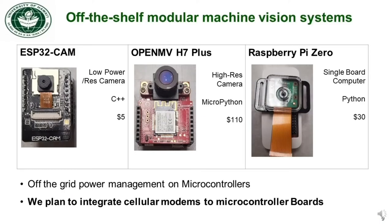All these boards have wireless remote communications. The ESP32 cam and OpenMV are both low-power microcontrollers. They are image-classification capable, and if they detect CRB in an image, they can use Wi-Fi to relay those images. Raspberry Pi Zero is a single-board computer. It fully supports image classification, and we use it for rapid testing of classification models before implementing them on the boards.